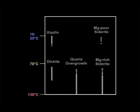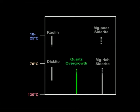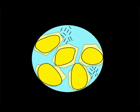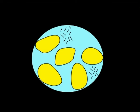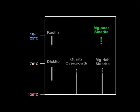At shallow depths, kaolin forms. If burial continues, kaolinite is later transformed into dickite. Most kaolinite and dickite simply replace the original grains and are relatively harmless for the reservoir. Not so quartz overgrowths — when temperatures reach 80 degrees centigrade, quartz grains begin to grow, reducing pore space, a problem increasing with depth. Another significant pore blocker is siderite, capable of infilling even large intergranular pores: at shallow depth, the magnesium-poor variety forms, and at greater depth, the magnesium-rich version.